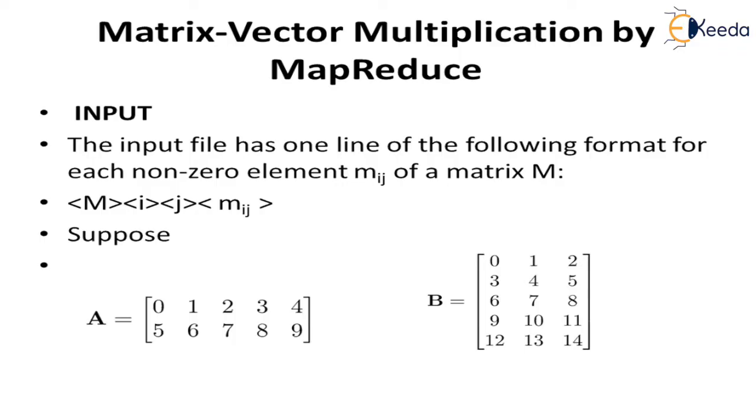The input file has one line of the following format. You should understand M is the name of the matrix, I and J are the position of the element inside the matrix, and M(I,J) is the element value. We have two matrices A and B. Let's understand how we can represent these A and B matrices in an input file format.